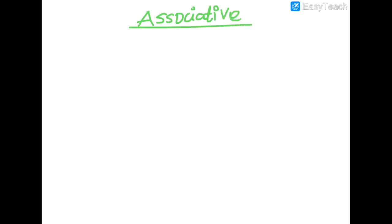The next property we are going to do is called associativity — the associative property. What does associative mean? Associative means to make into a group — association. For example, let's look at the problem: 2 plus 3 plus 4, as given in your book.